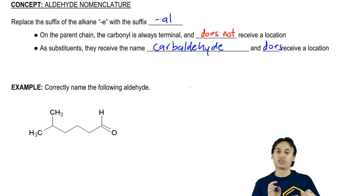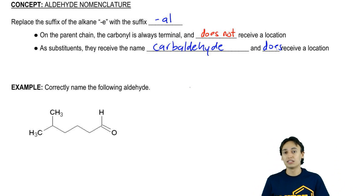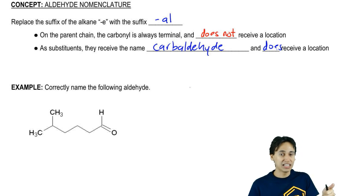If you're able to put it into the root chain, then the root is going to be -al and there's going to be no location. However, if you're not able to put the aldehyde in your root chain, it's a branch off of that root chain, then you do have to give it a location and call it a carbaldehyde instead to indicate that it is now a substituent.